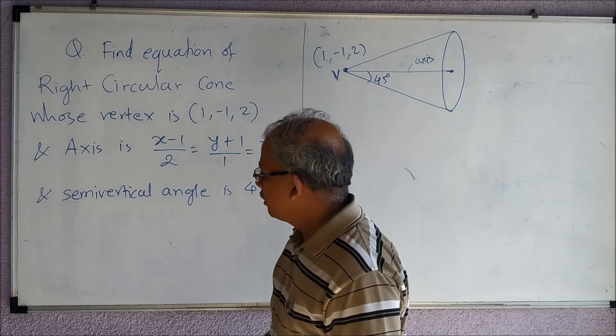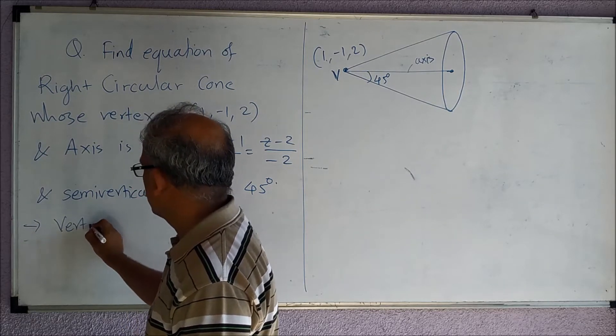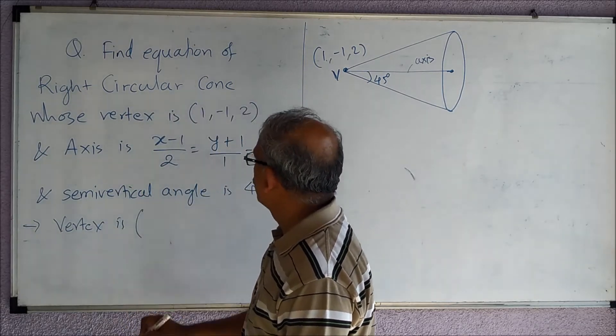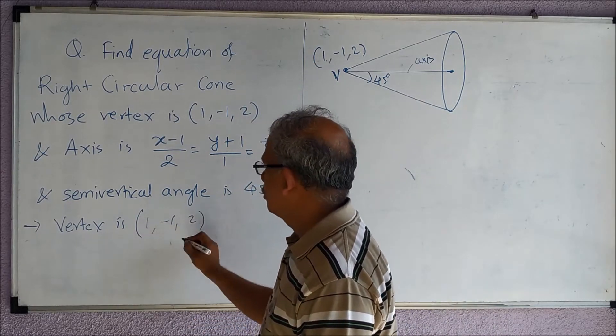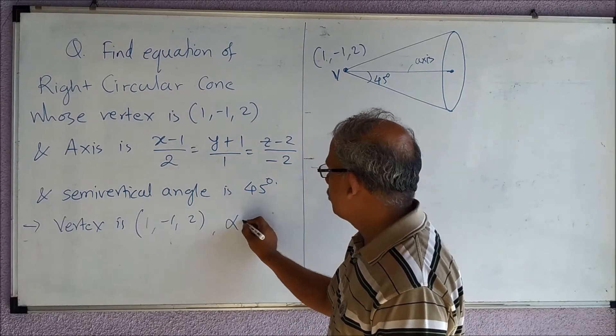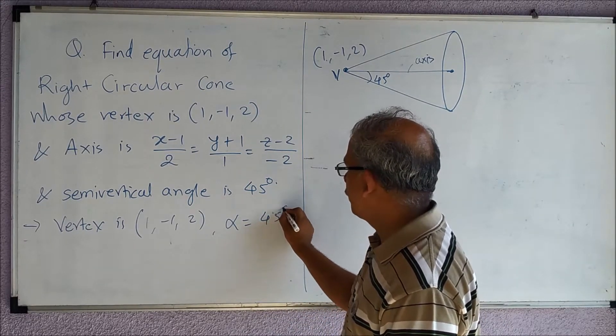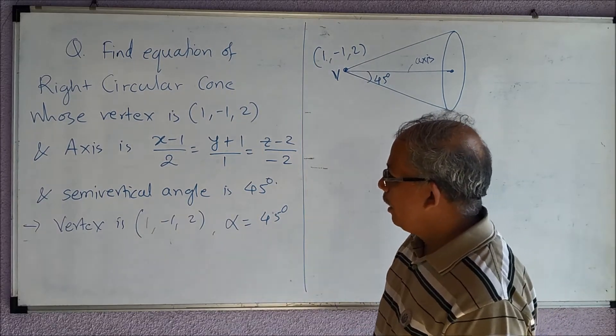So we will list out all the things here. Vertex is (1, -1, 2), then alpha, that is the semi-vertical angle, is 45 degrees or π/4 you can say.